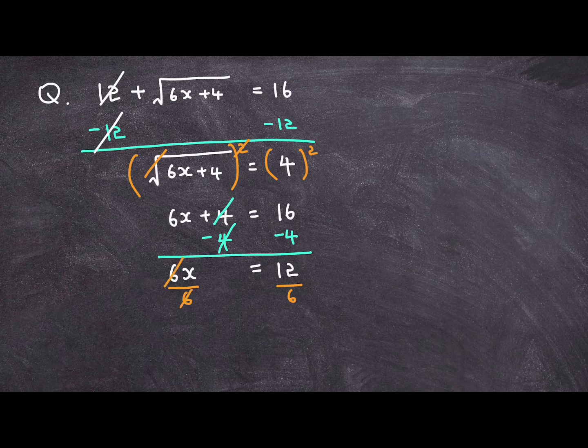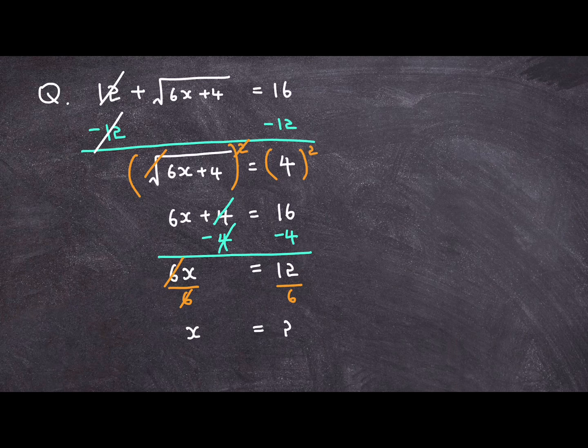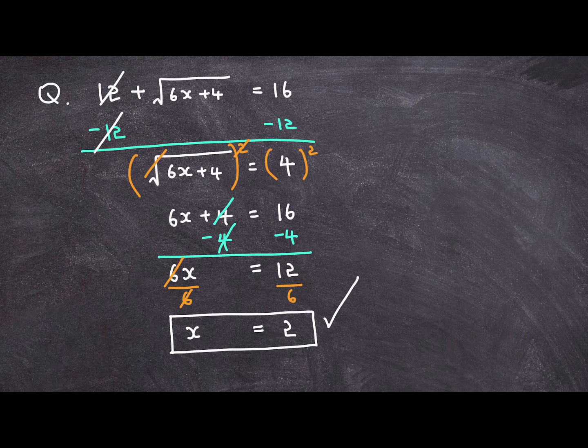That way I can get rid of that coefficient of 6 and say that x is equal to 12 divided by 6 or 2. So that's how I arrived at my final answer of x is equal to 2.